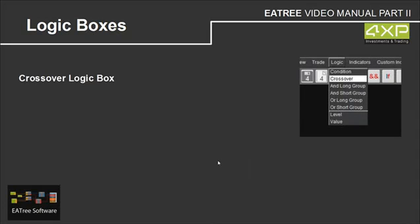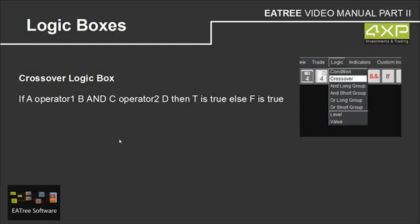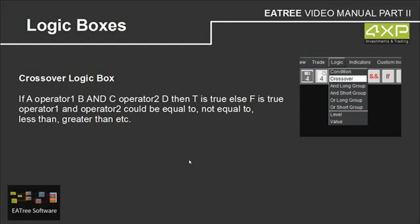Crossover logic box. We can access it by using the text menu and selecting 'crossover'. We can also access all other logic boxes discussed in this video from there. The logic behind this box is: if A operator1 B, and C operator2 D, then T is true, else F is true. Operator 1 and operator 2 could be equal to, not equal to, less than, greater than, etc.